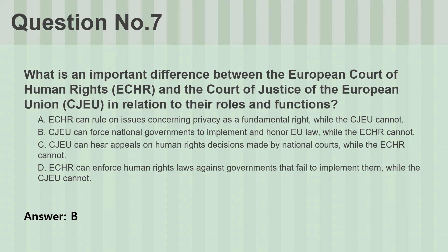Question number seven. What is an important difference between the European Court of Human Rights, ECHR, and the Court of Justice of the European Union, CJEU, in relation to their roles and functions? A. ECHR can rule on issues concerning privacy as a fundamental right, while the CJEU cannot. B. CJEU can force national governments to implement and honor EU law, while the ECHR cannot. C. CJEU can hear appeals on human rights decisions made by national courts, while the ECHR cannot. D. ECHR can enforce human rights laws against governments that fail to implement them, while the CJEU cannot. Answer: B.